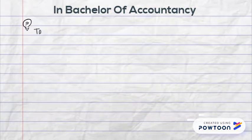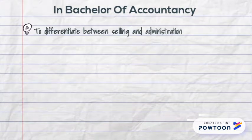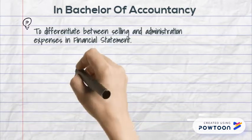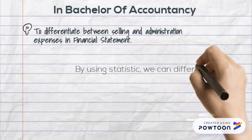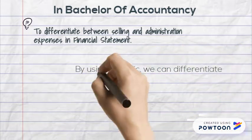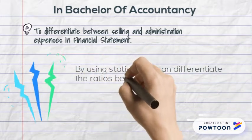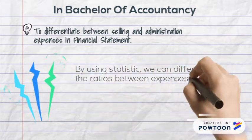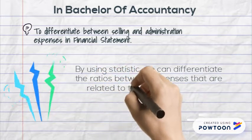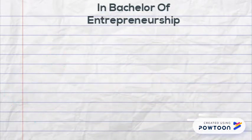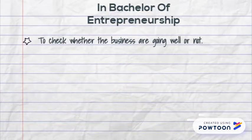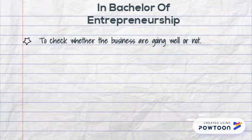Third, to differentiate between selling and administration expenses in financial statements. By using statistics, we can differentiate the ratios between expenses that are related to the factory or office.